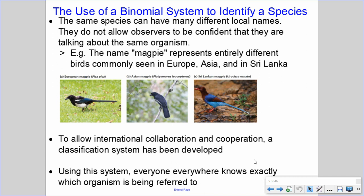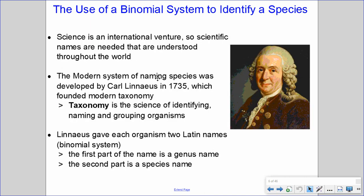This modern system of naming species was developed by Carl Linnaeus in 1735, and by creating this system he also founded modern taxonomy — the science of identifying, naming, and grouping organisms. In Linnaeus's system, each organism was given two Latin names, hence 'binomial': bi meaning two, nomial meaning naming. The first part of the name is the genus name and the second part is the species name.